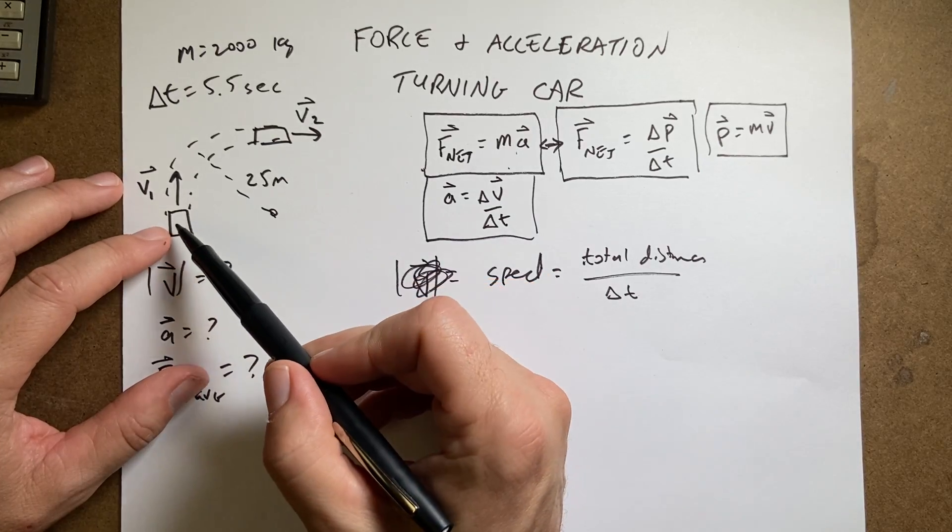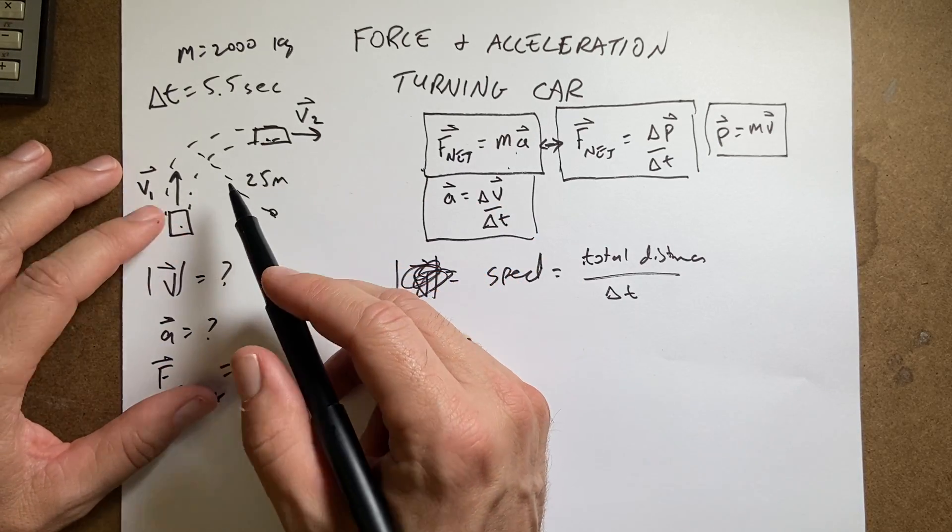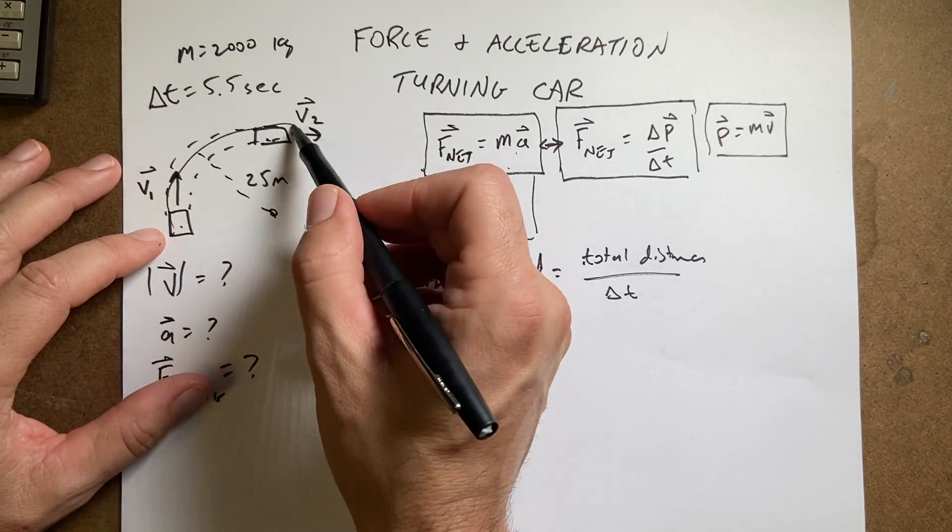The speed is going to be the change in the total distance over the change in time. So, I mean, that's different than going from here to there. Okay, that would be the average velocity and I'll calculate that too. So if I just want to know how fast it's going, I know the distance it goes is a quarter of a circle.